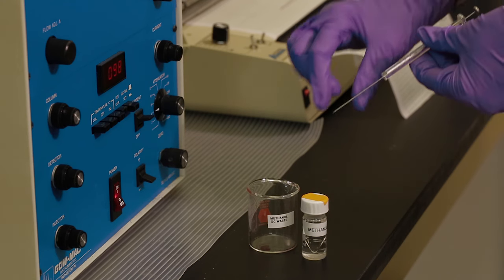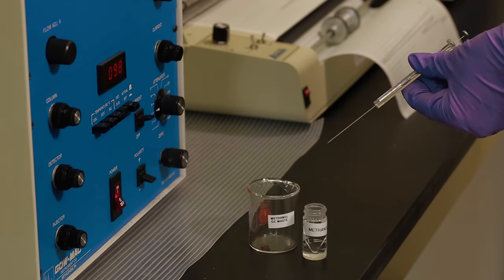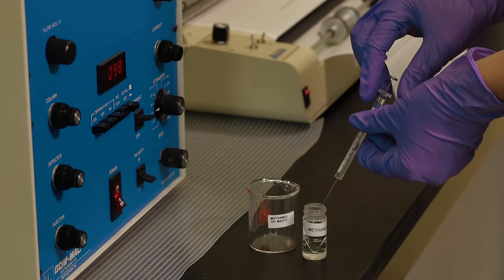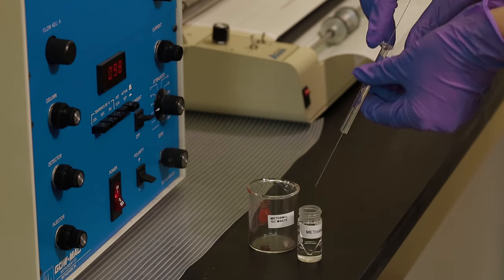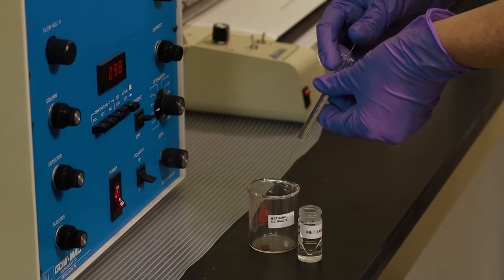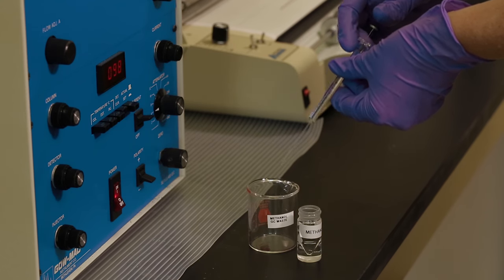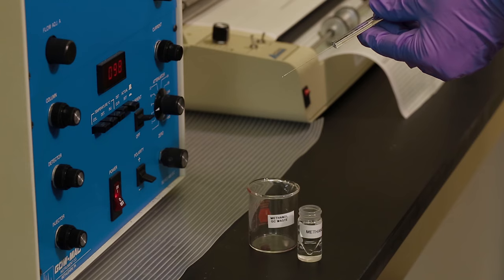While the sample runs through the column, clean the syringe that you used to inject your sample. Pull a solvent, such as methanol, into the syringe. Then empty it into a waste container to clean it of any remaining sample.